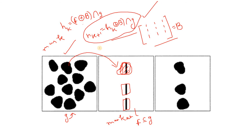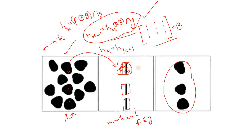We stop the iteration when h(k) equals h(k+1). That means the marker, after successively applying the formula, has got the complete shape of our original mask binary object. At that point we stop the iteration and get the output. Basically, from a small subset of our binary object we can reconstruct the whole binary object present in our binary image — but only those parts for which the marker is a subset of our original image.